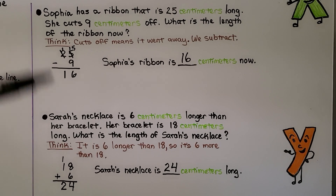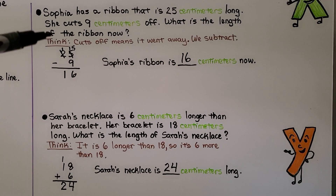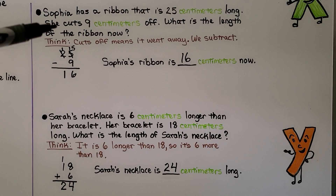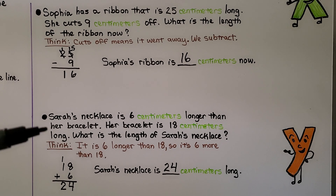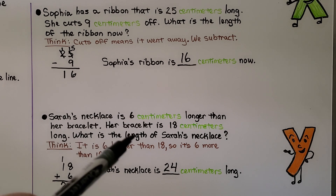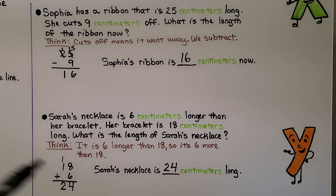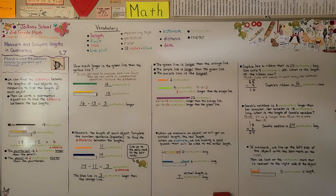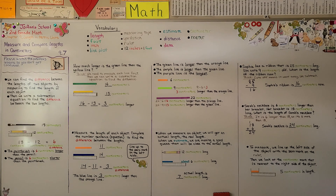We solved each problem in a different way. Because part of the ribbon was cut off, we subtracted. Because the necklace was 6 centimeters longer than 18, we had to add to solve it. If you have a centimeter ruler, you can look for things around you, measure them, and compare their lengths in centimeters — just remember to line up the object on the left side with the zero mark.